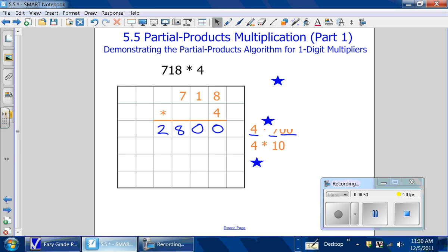Next, we'll multiply 4 times 10. 4 times 10 is 40. And finally, 4 times 8. 4 times 8 equals 32.